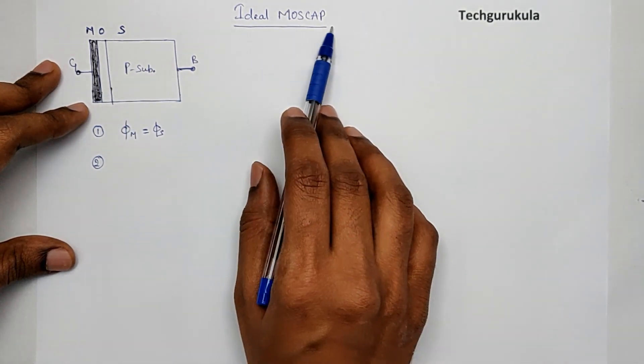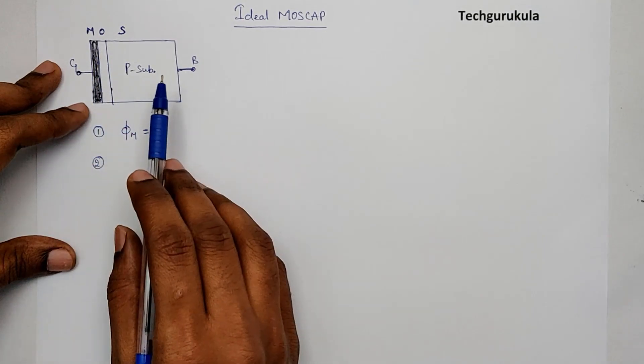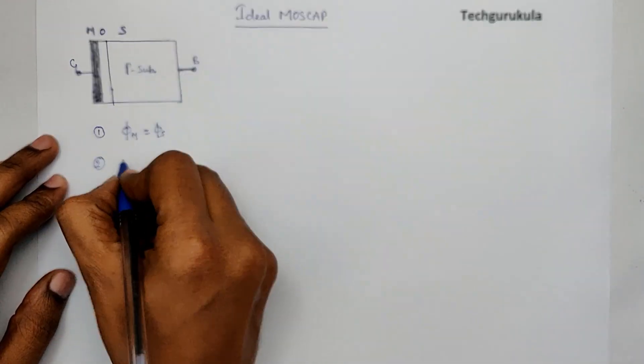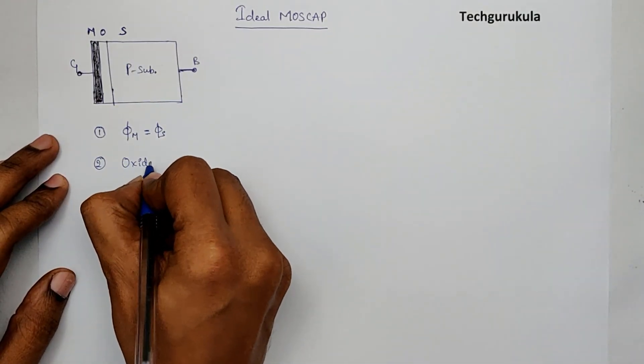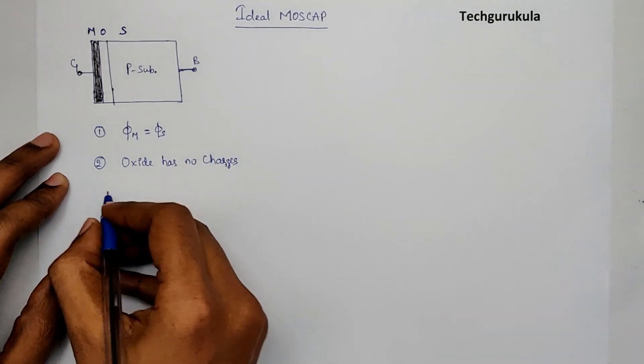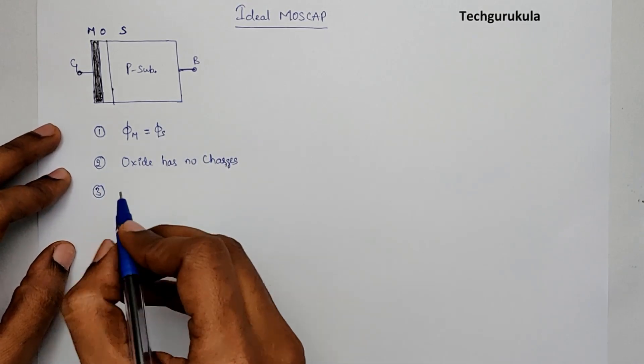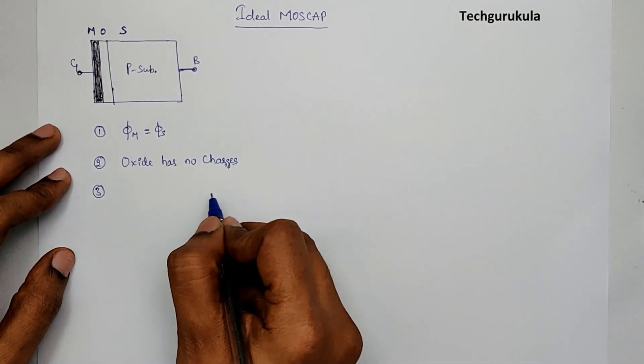So to start with, we are going to deal with ideal MOSCAP. We are going to assume that there are no charges in the oxide, which means oxide has no charges.